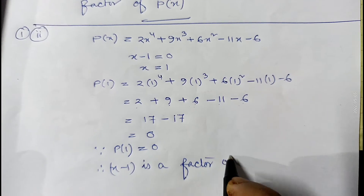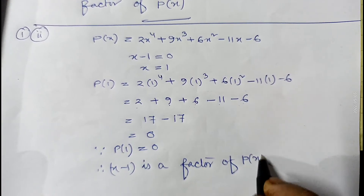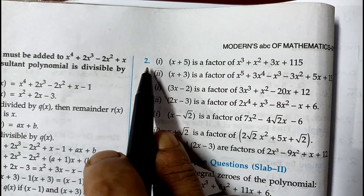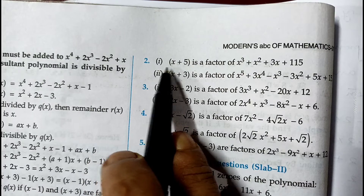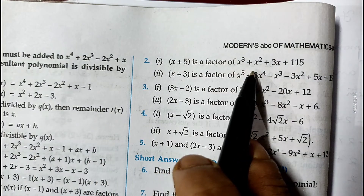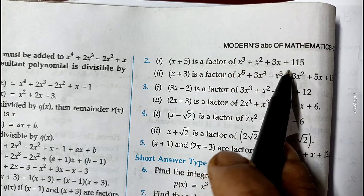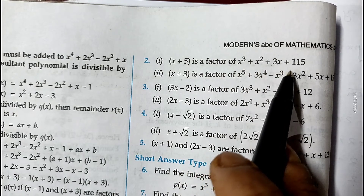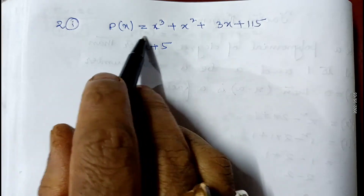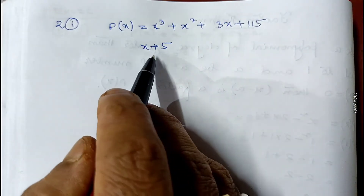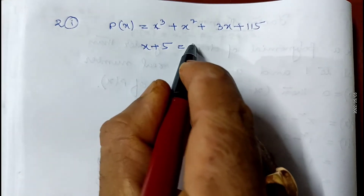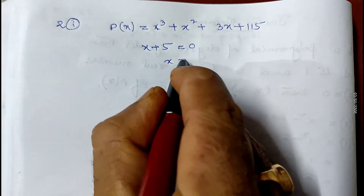Now the first part of question number 2: we have to prove that x plus 5 is a factor of x cubed plus x squared plus 3x plus 115. This is the given polynomial. We have to check that x plus 5 is a factor, so we make x plus 5 equal to 0, giving x equals minus 5.